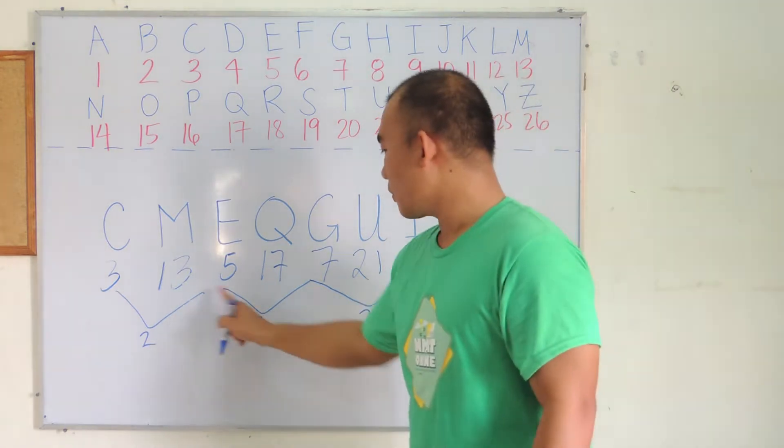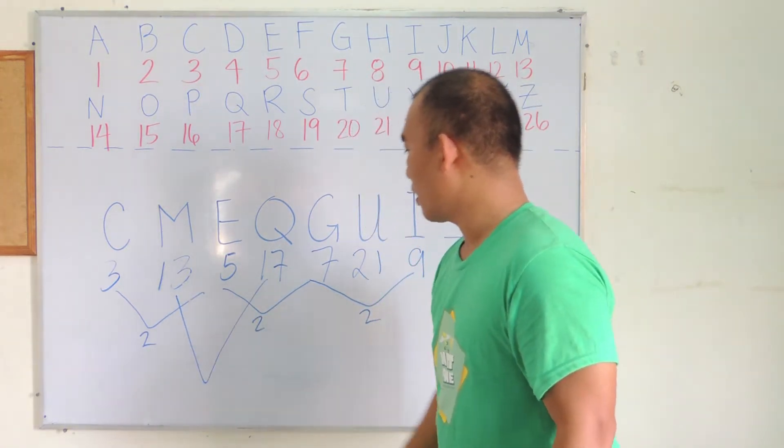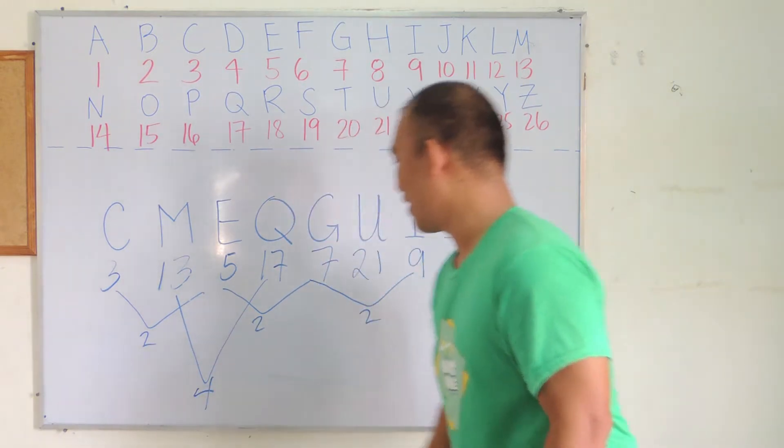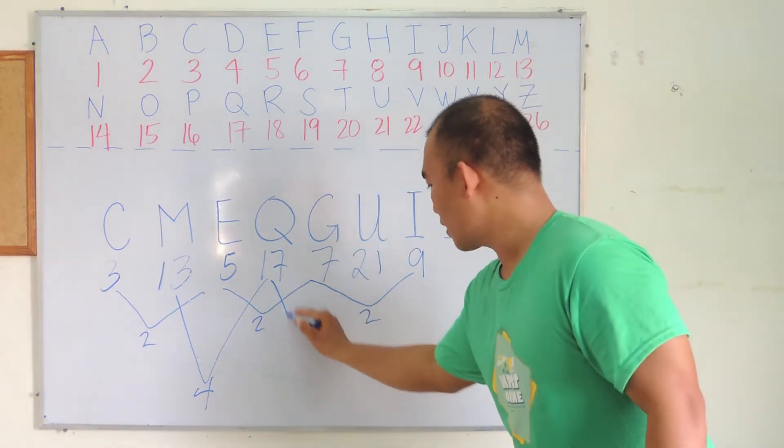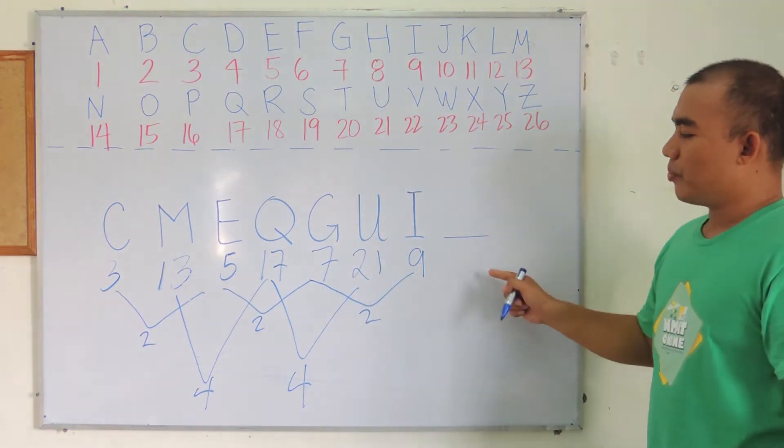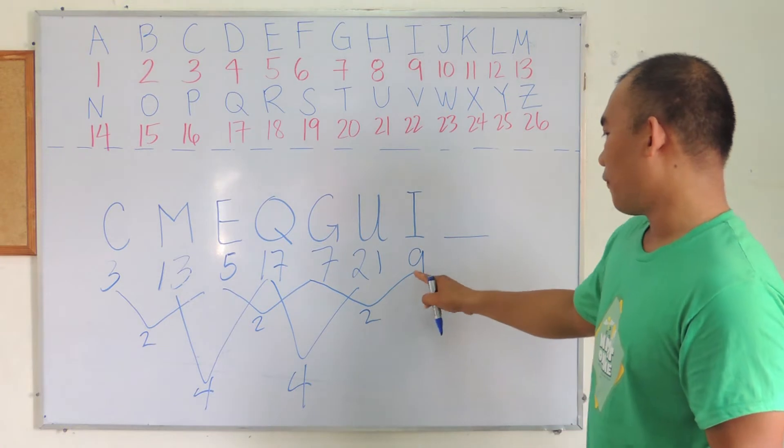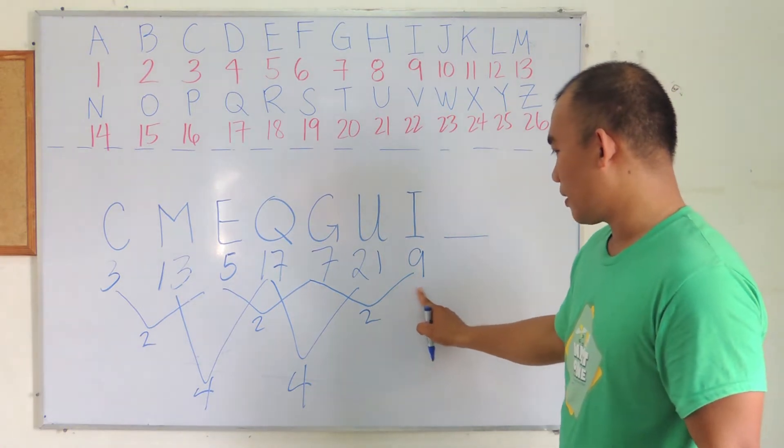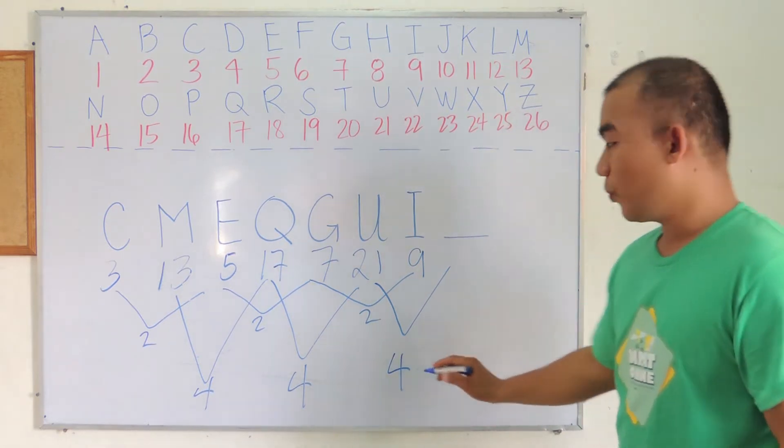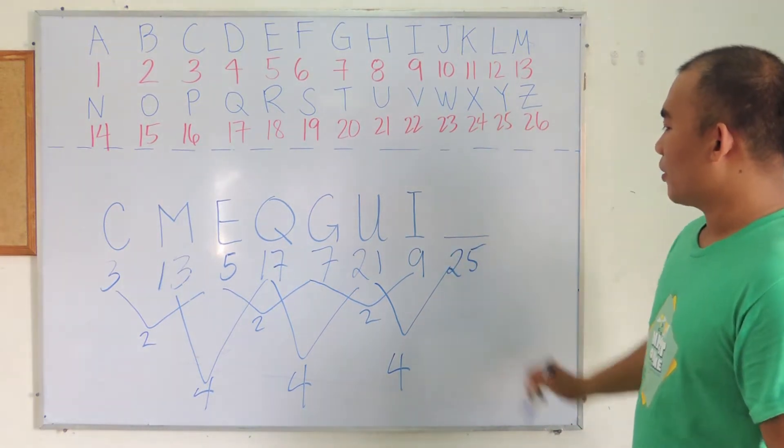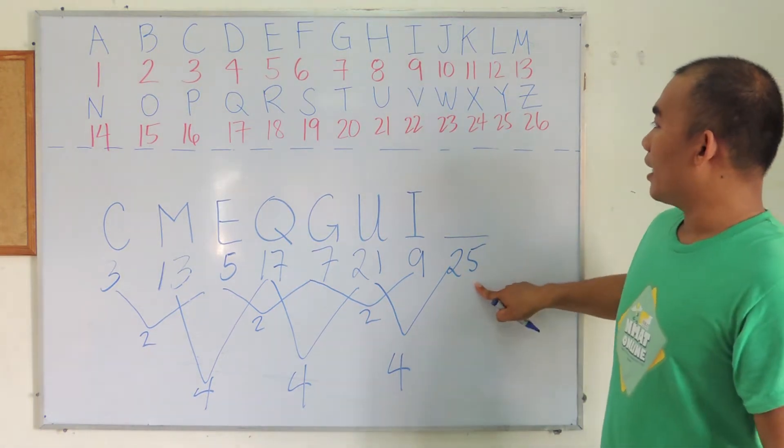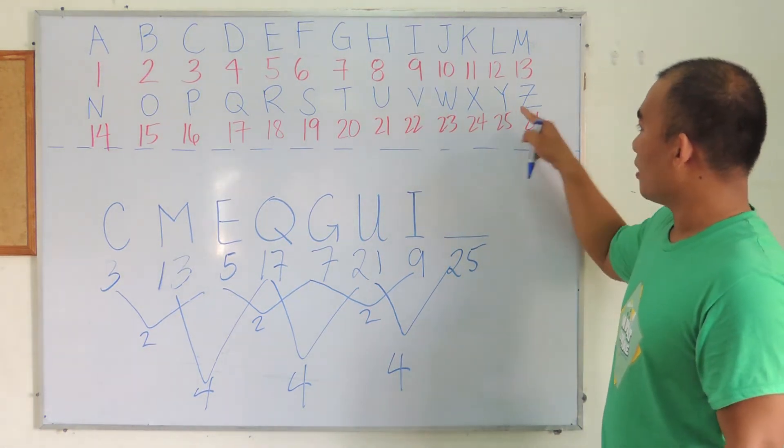We have from 13 to 17, it's plus 4. 17 to 21, it's also plus 4. So therefore, the next number after 9 is 21 plus 4, which is 25. So the correct answer in the letter series is the 25th letter in the English alphabet, which is the letter Y.